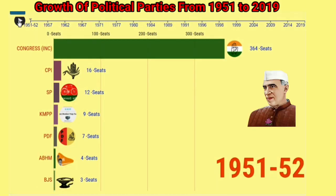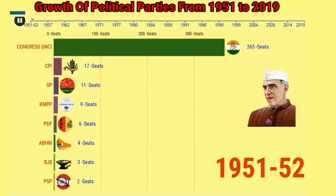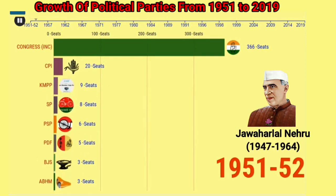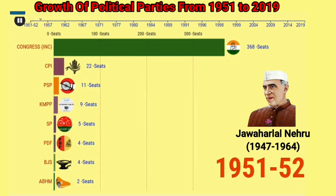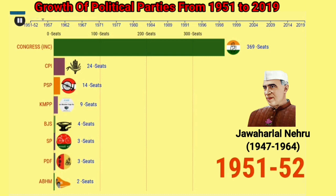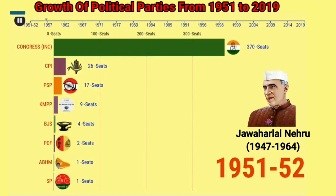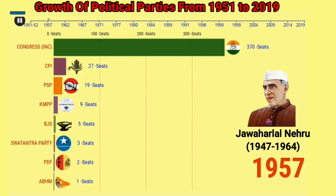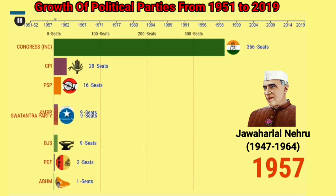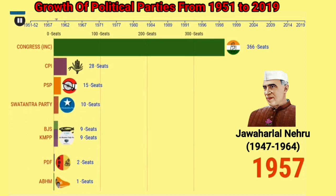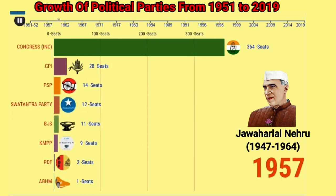Jawaharlal Nehru became the first Prime Minister of India from the Indian National Congress party with 364 seats, and he served as the Prime Minister of India from 1947 to 1964. He is the longest serving Prime Minister in India. See those graphs for seats secured by each party.